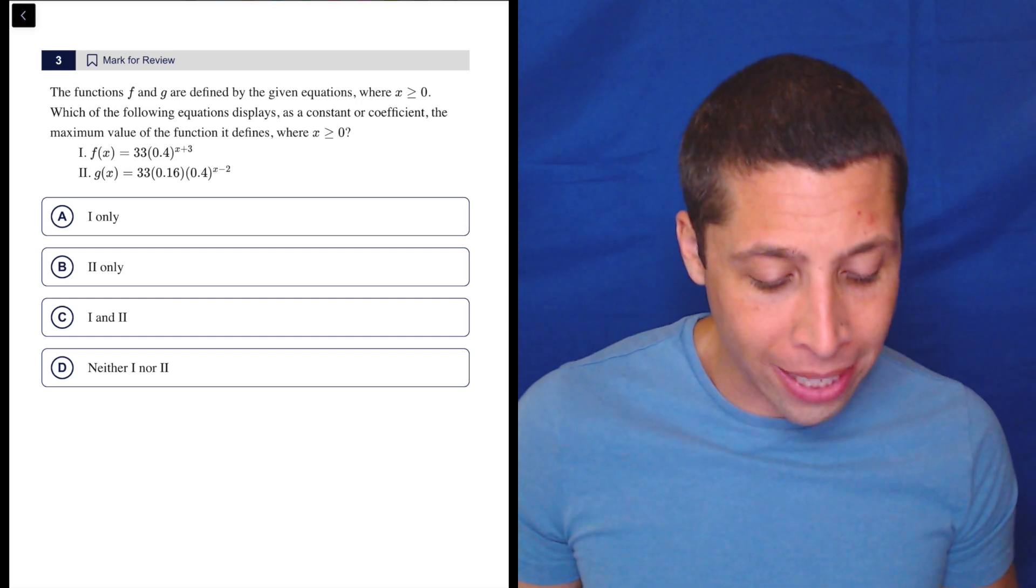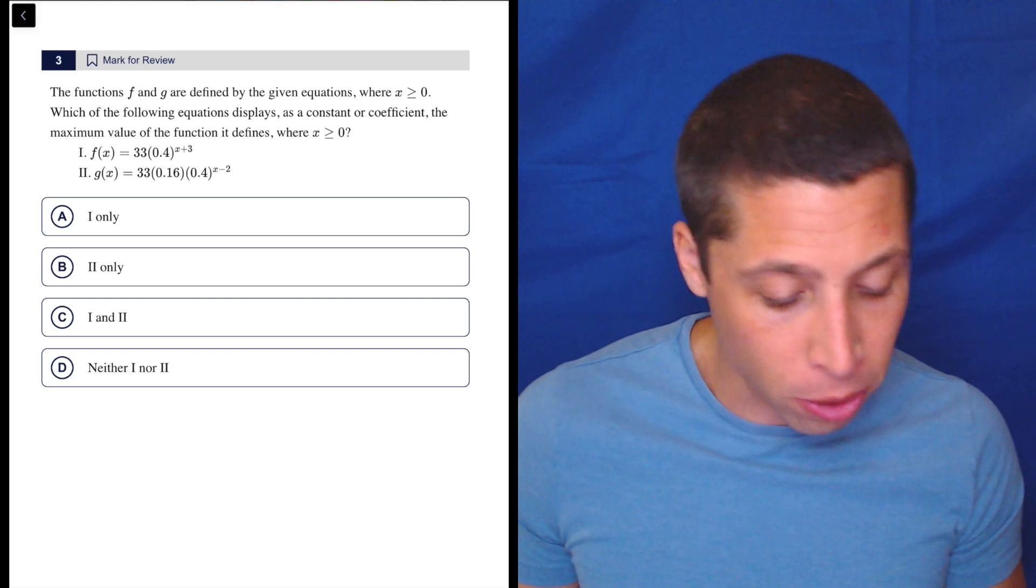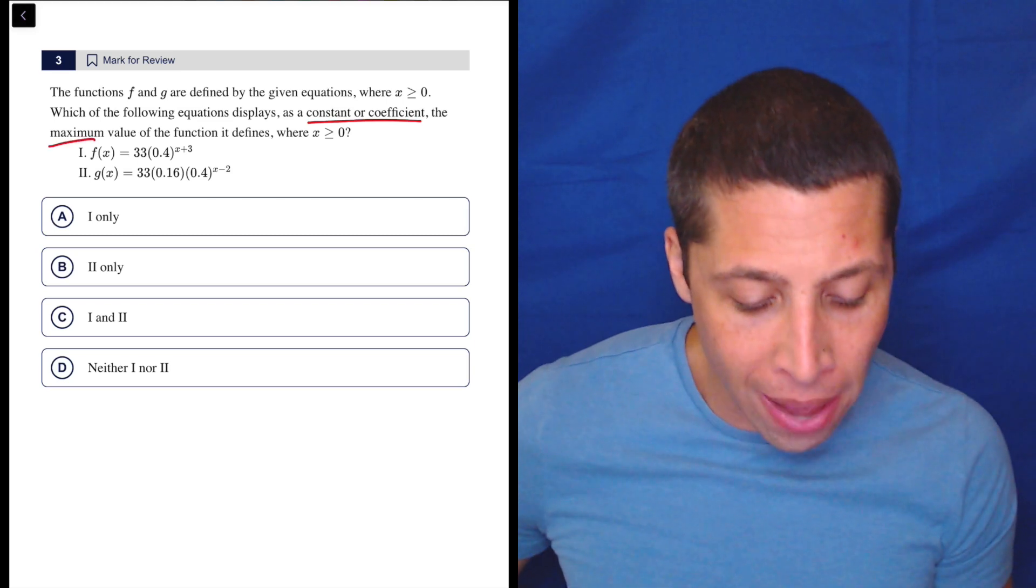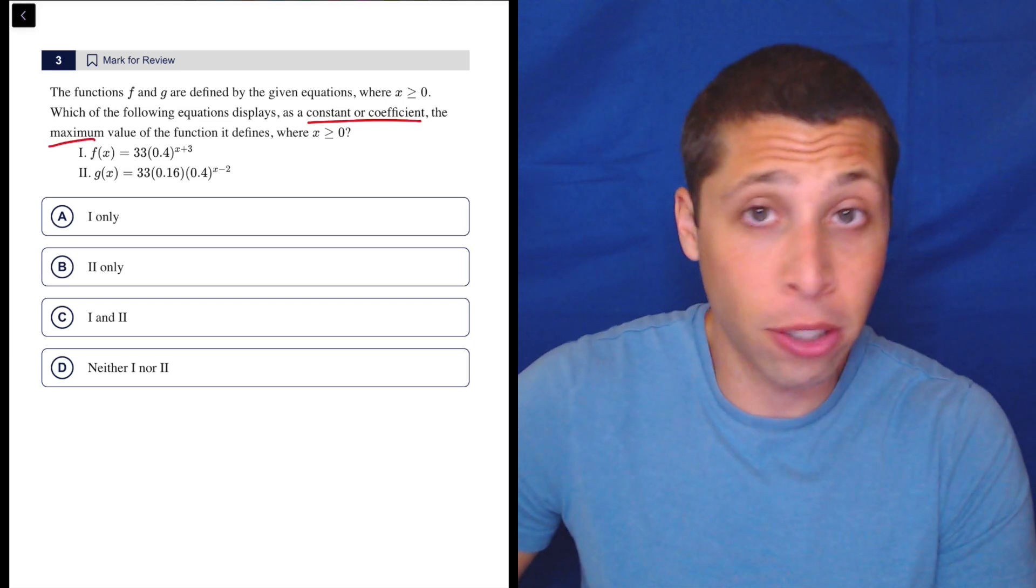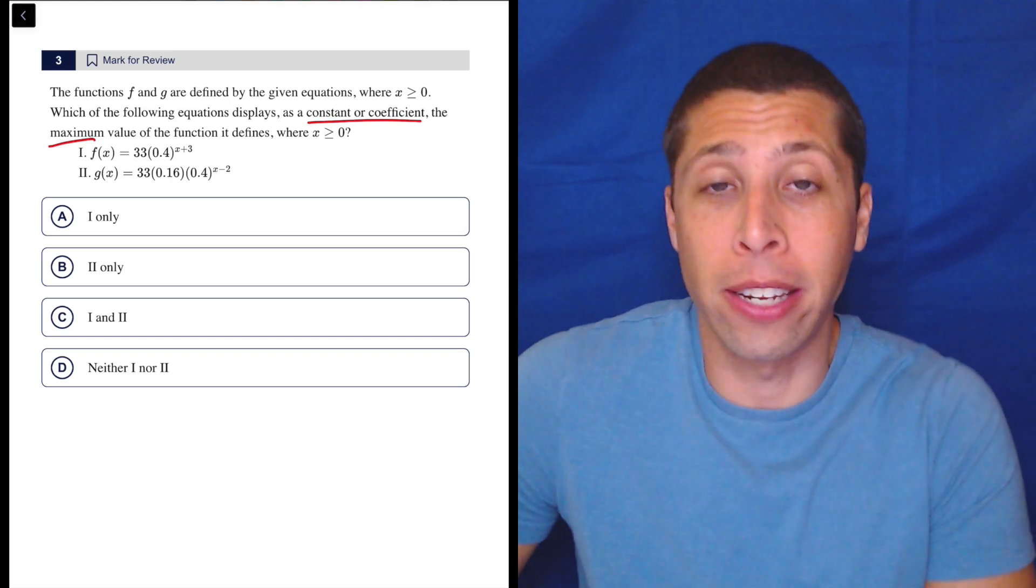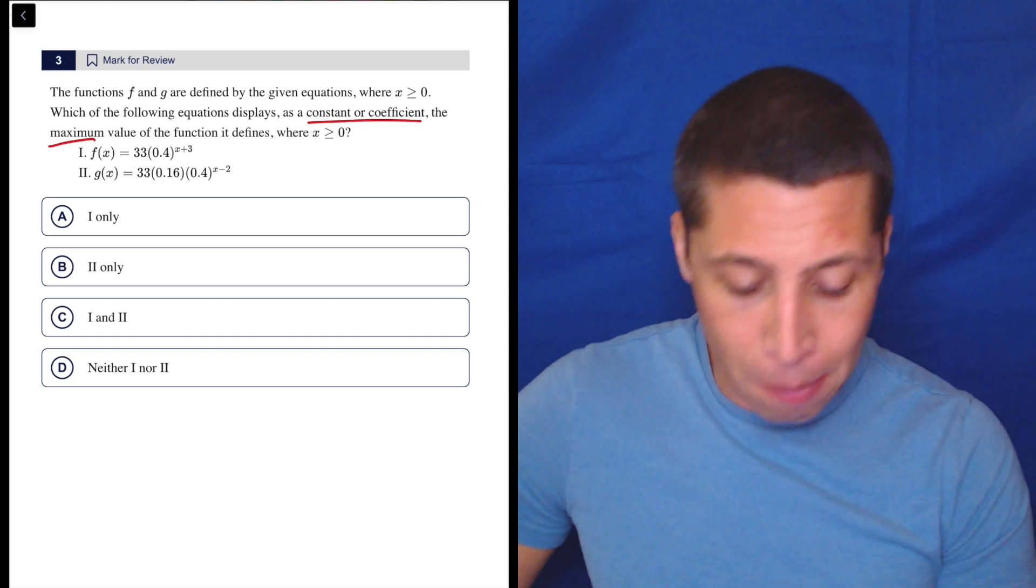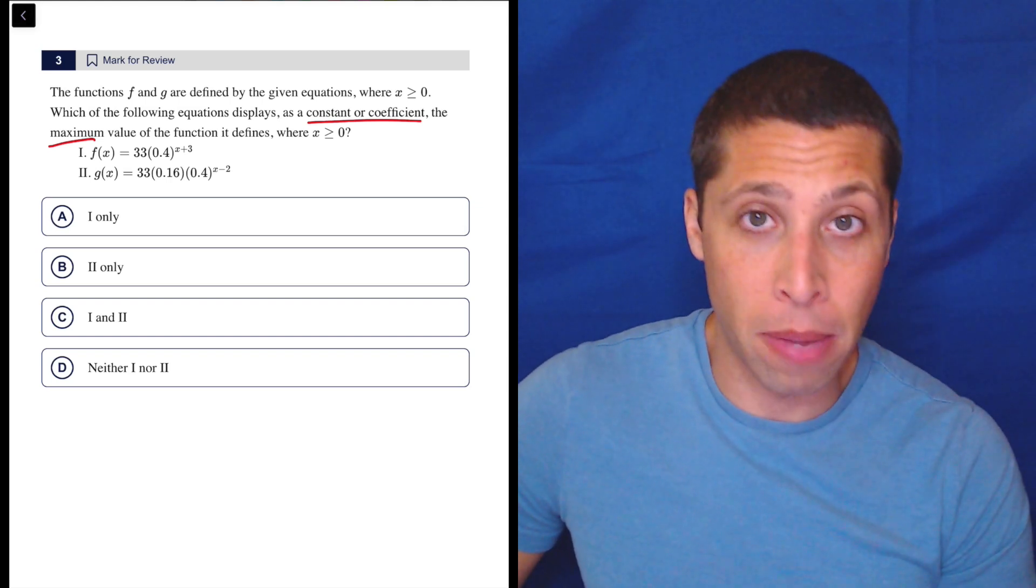Which of the following equations displays as a constant or coefficient the maximum value of the function it defines, where x is greater than or equal to zero? So constant or coefficient just means it's a number in the equation. Maybe I can think about this and figure out what the maximums and minimums are going to be.